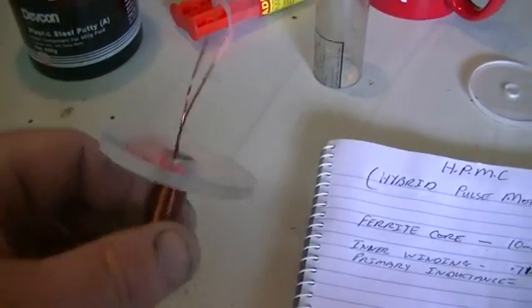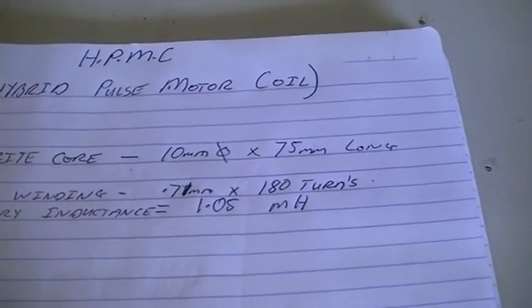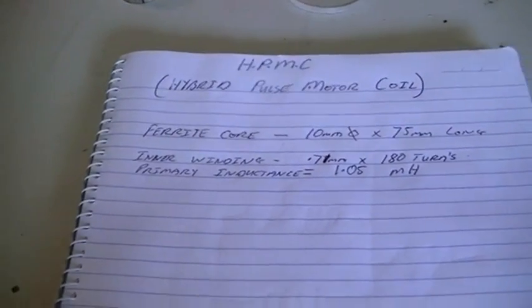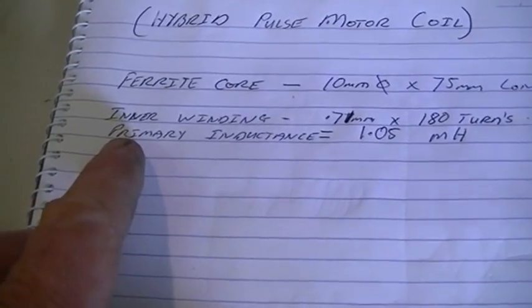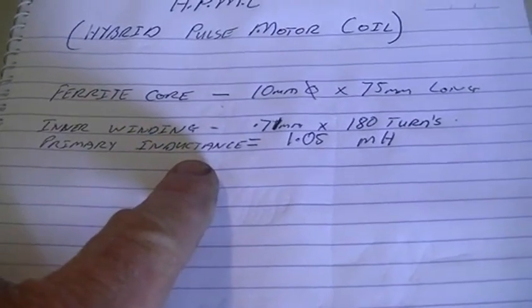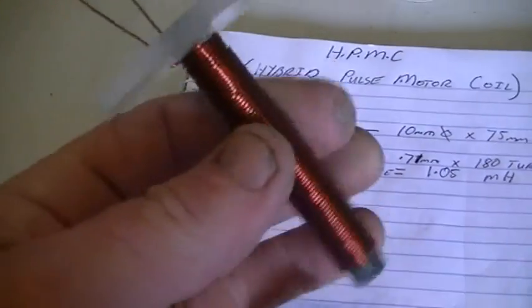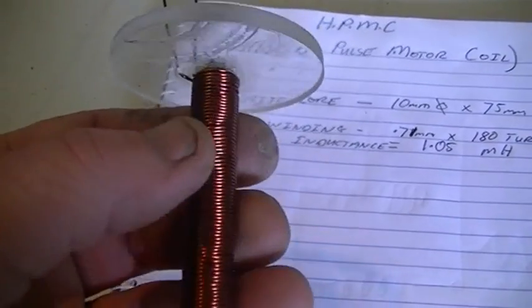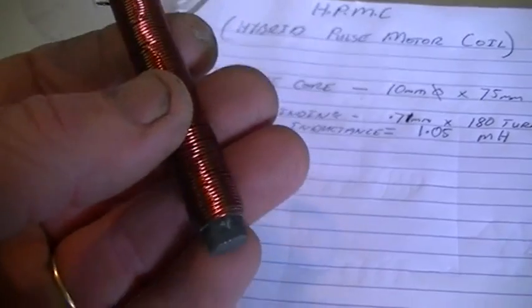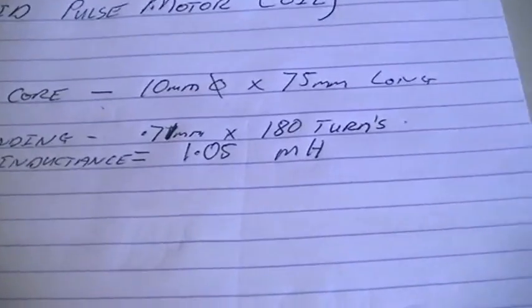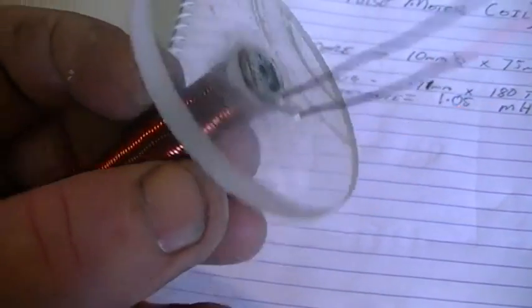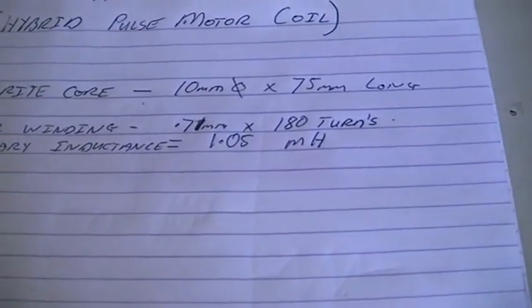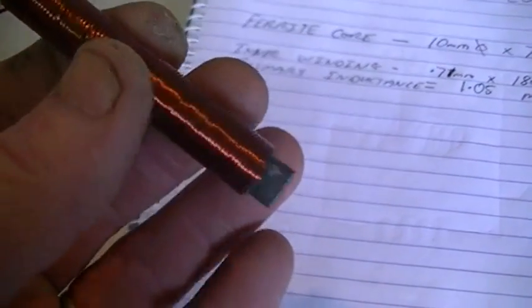Alright, so we have two layers on there and that gave us a total of 180 turns. So I'm just documenting everything as I go and what I'm calling here our primary inductance. That is the inductance before we put the rest of our core material over this winding, just to see what effect it has when we do that. So its primary inductance is 1.05 millihenrys and we have a total of 180 turns on there, all up 90 each way.